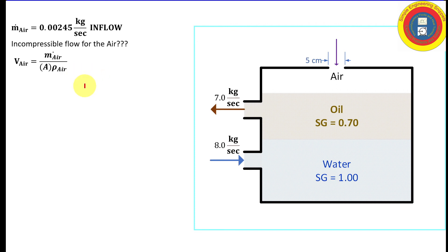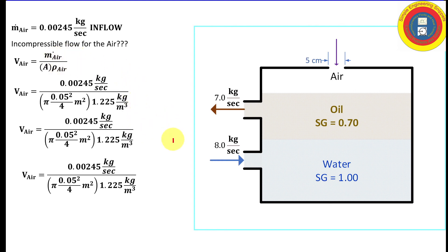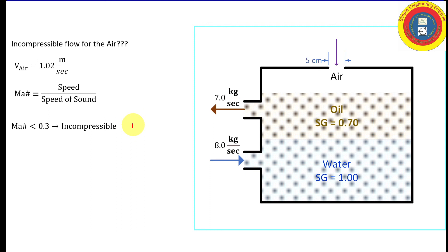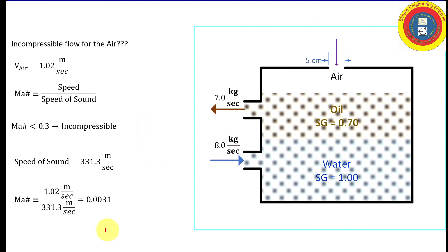To check compressibility, we calculate the velocity of the air using all known quantities, obtaining 1.02 m/s. We then calculate the Mach number — the rule of thumb is that if Ma < 0.3, the flow can be treated as incompressible. The speed of sound is approximately 330 m/s, giving a Mach number of about 0.003, which is very low. Therefore, the incompressible flow assumption is very reasonable for this situation.